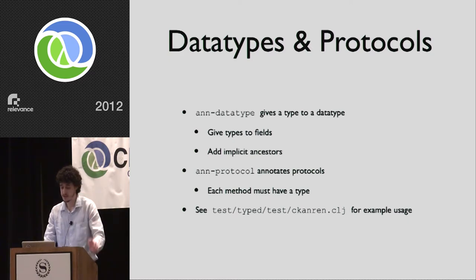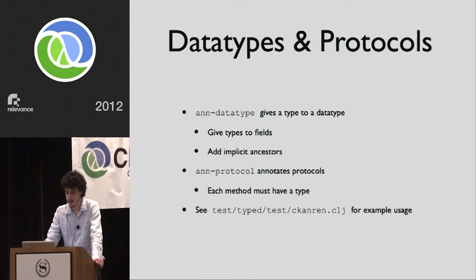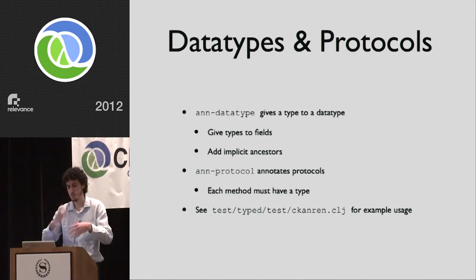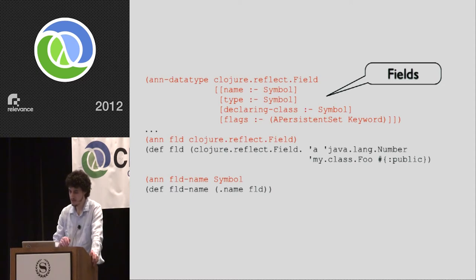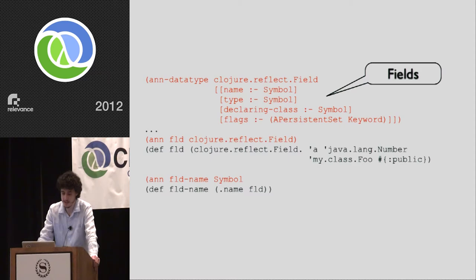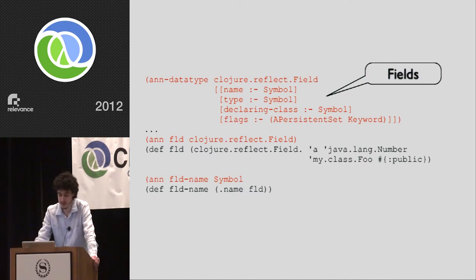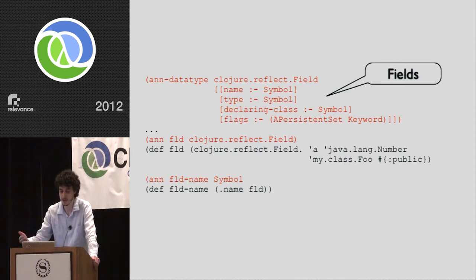Type Closure can give types to data types and protocols. For protocols, you can annotate each method including the first argument. There are some problems around type inheritance between protocols that I need to look at. For data types like clojure.reflect.Field, we can annotate expected types using the ann-datatype form, which also works for data types in other namespaces. The difference is that if the data type is in your own namespace, the definition will be type-checked; otherwise it won't. clojure.reflect.Field has four fields: name, type, declaring-class, and flags, and we give types for each field.